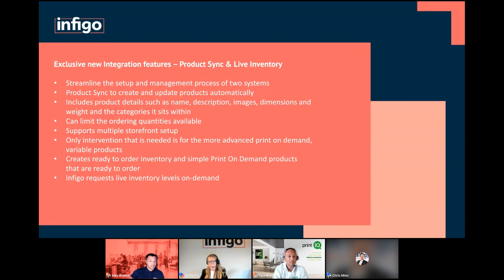We've also added support for fetching and validating live inventory directly from PrintIQ on demand. When a customer lands on a product that is an inventory product, we make a request to PrintIQ for the stock levels of that product at that time. You only need to manage this in one place, and it eliminates the risk of allowing people to order when stock doesn't exist. When a product is ordered, the stock is deducted in PrintIQ, and the next time a customer visits that product, the live inventory count reflects having been ordered before.